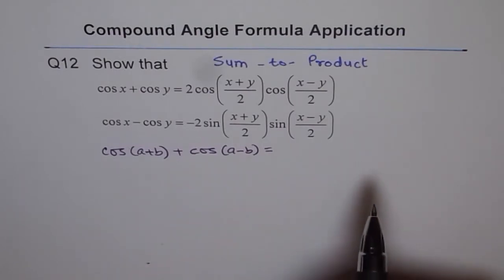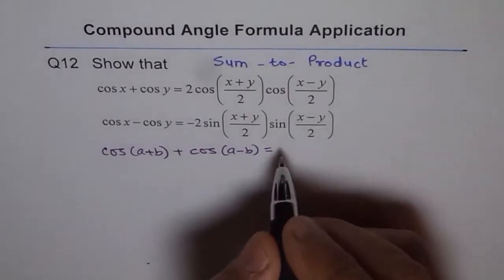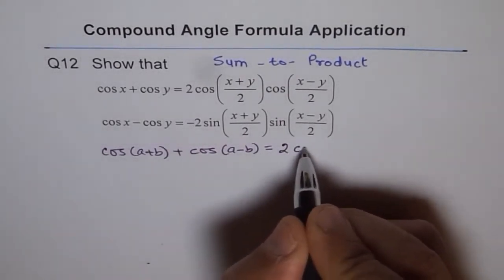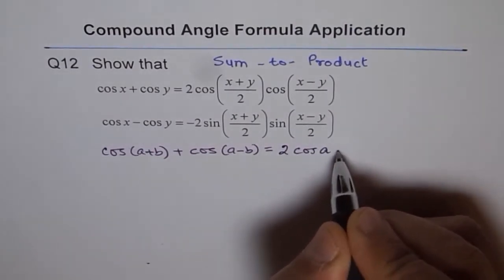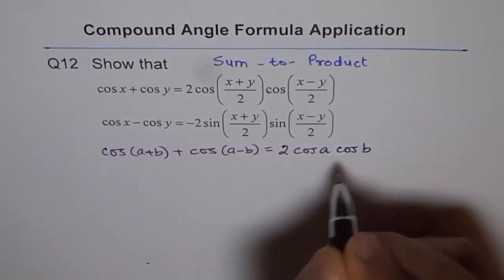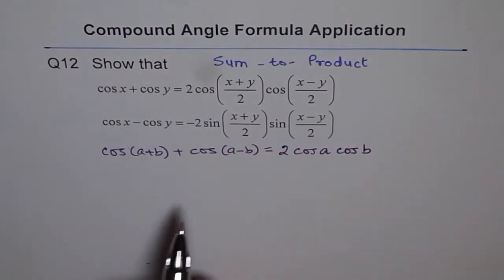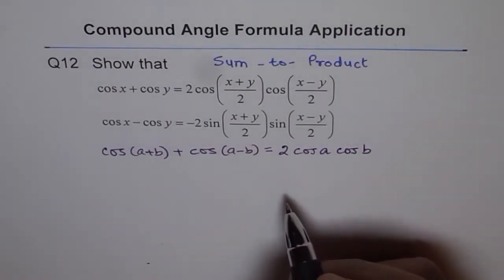When you add these two, then the second term is cancelled out. That is plus and minus sin a sin b. And what remains is two times cos a cos b. So I'd like you to do that on your own once again, just to get the practice.